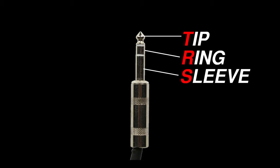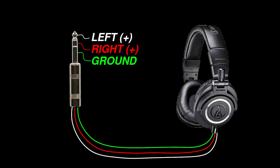A quarter-inch TRS connector contains three sections: a tip, ring, and a sleeve. This allows for three connections between the devices. Quarter-inch TRS connectors are most commonly used for a stereo connection or a balanced line level connection. A TRS can only facilitate up to a single channel of balanced audio. When a TRS connector is used for stereo, such as the left and right channel of headphones, two unbalanced signals are carried over the single TRS connector.